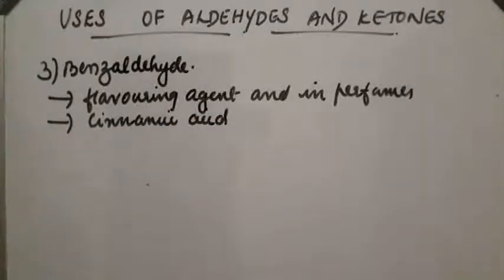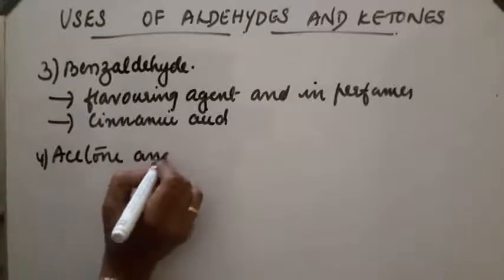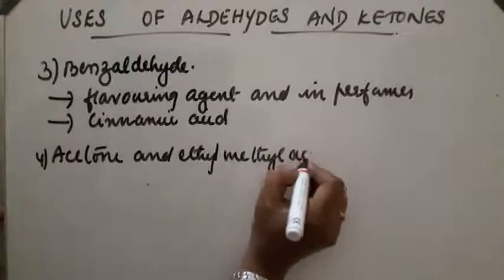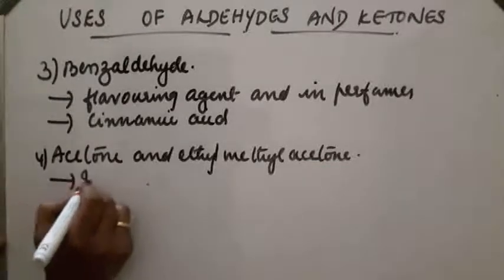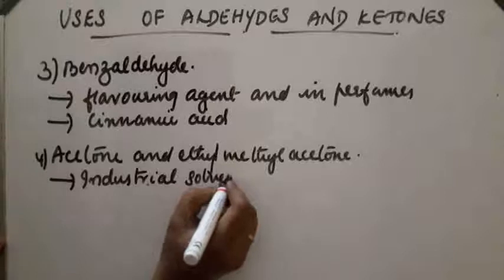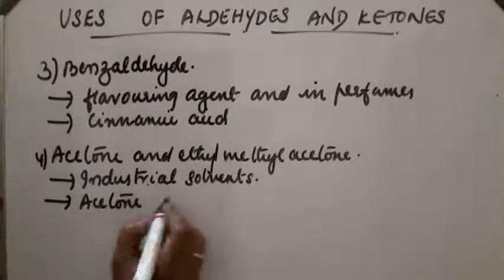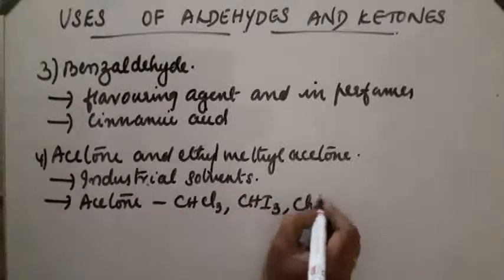Acetone and ethyl-methyl-ketone are used as industrial solvents — as solvents for acetylene, cellulose acetate, varnishes, and lacquers. Acetone is also used to prepare chloroform, iodoform, and chloretone.